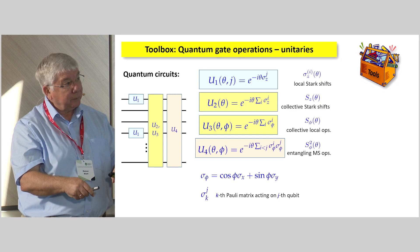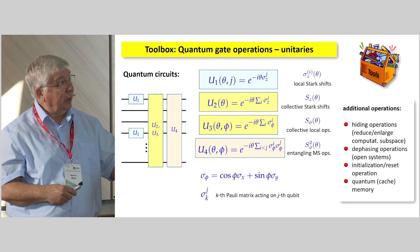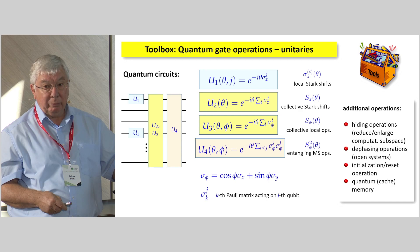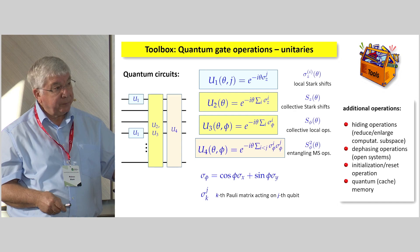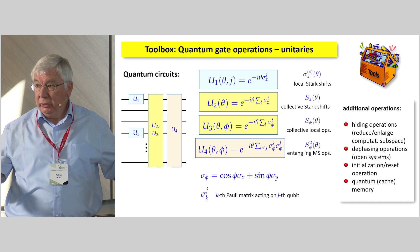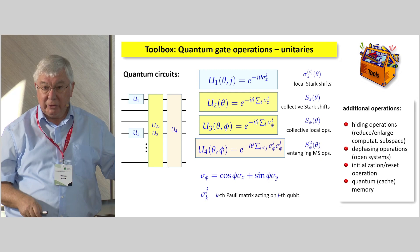We have many more operations, like hiding operations. So we can just hide one of these qubit lines by transferring them to a different state from the computations that go otherwise on in the register. We have dephasing operations for open system simulations. We have initializations and reset operations. We even can use other states of these atoms that we have here to realize a full quantum cache memory, meaning that we can store the quantum information of a qubit somewhere in some excited states, while we perform operations on the entire register. All of these things are available, and they are underlying all of the stuff that we are doing.